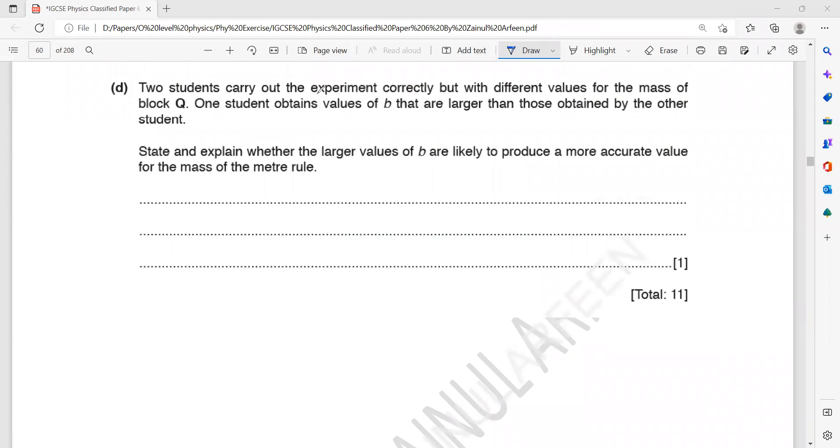Now two students carry out the experiment correctly, but they use different values of the mass. One student obtains values of V that are larger than those obtained by the other. State and explain whether the larger values are likely to produce more accurate values of the mass.